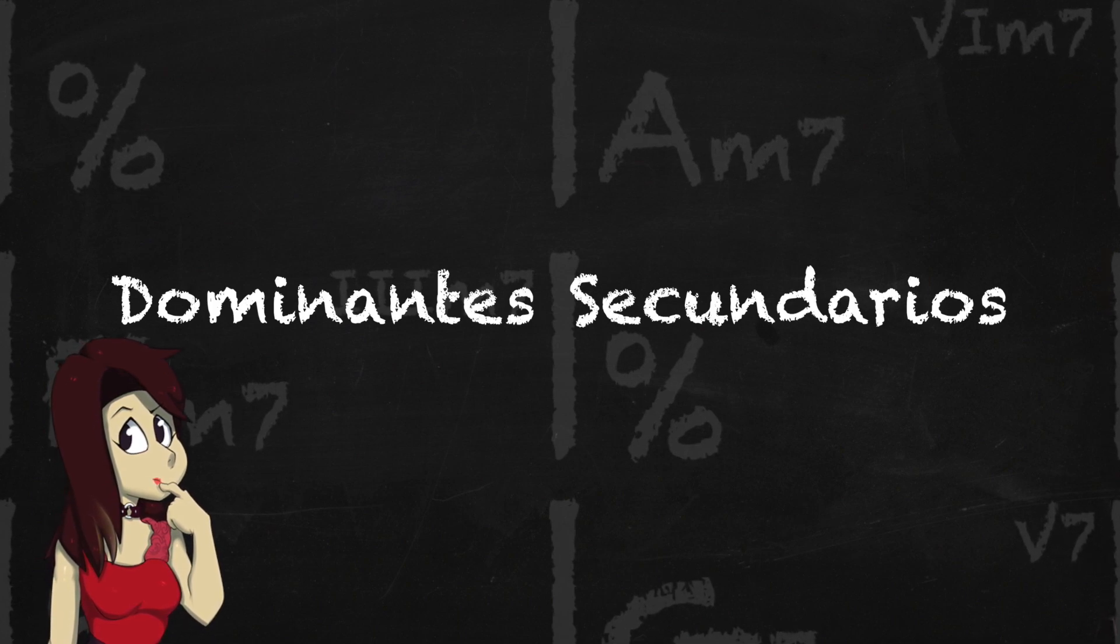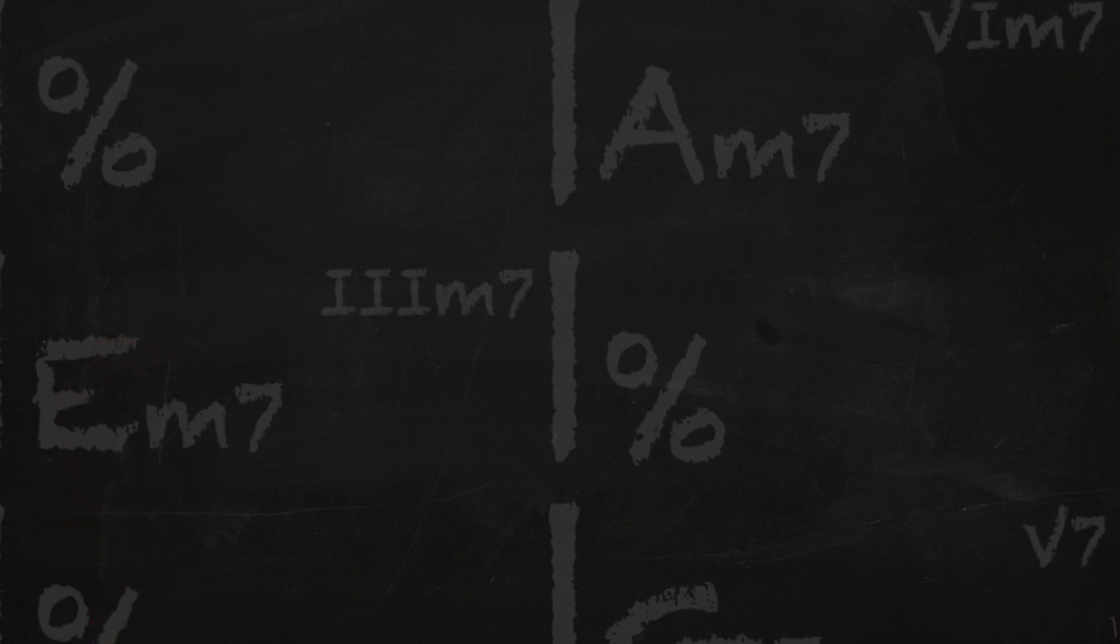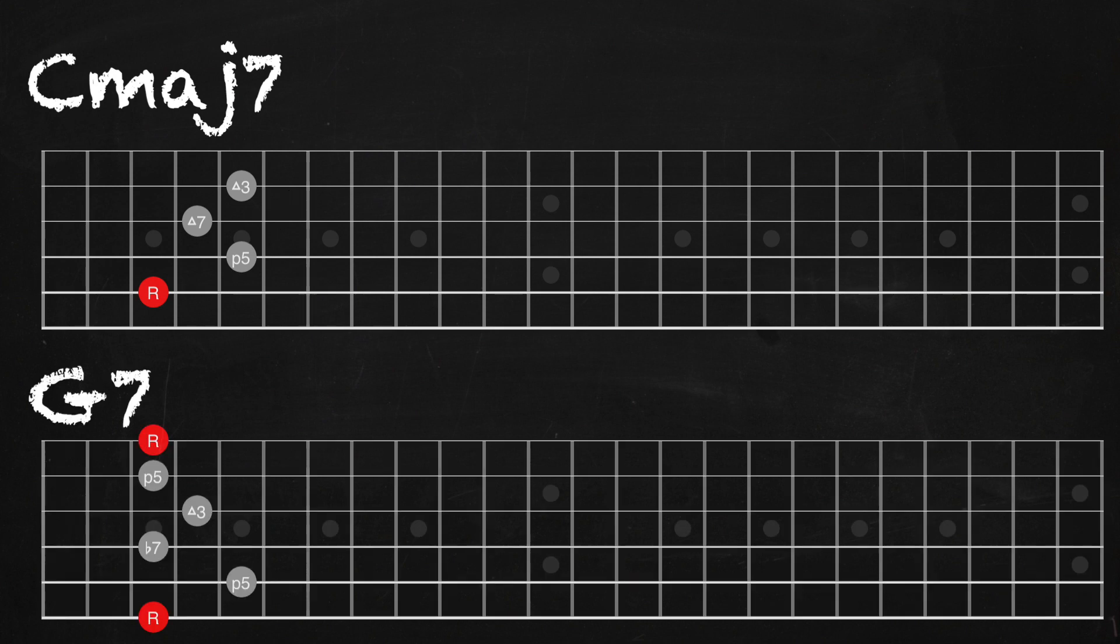Pero antes de pasar a los dominantes secundarios, te tengo que enseñar a cómo buscar los quintos grados de un acorde. Fíjate en los siguientes diagramas. El primer acorde que vamos a ver es un Do maj7, y mi pregunta es: ¿cuál es el quinto grado dominante de Do maj7? Si te das cuenta la quinta justa de un Do maj es un Sol, por lo tanto el acorde dominante de Do maj7 va a ser Sol 7.